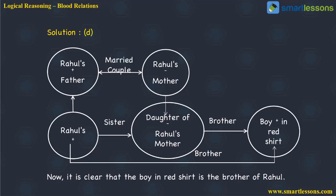From the diagram you can clearly see that Rahul's mother's daughter — Rahul's sister — has two brothers: one is Rahul himself, and the other is the boy in the red shirt. So the boy in the red shirt is Rahul's brother. Mother's daughter's brother means his sister's brother, which means he is my brother. The relationship is that of a brother, so the answer is option C — Brother.